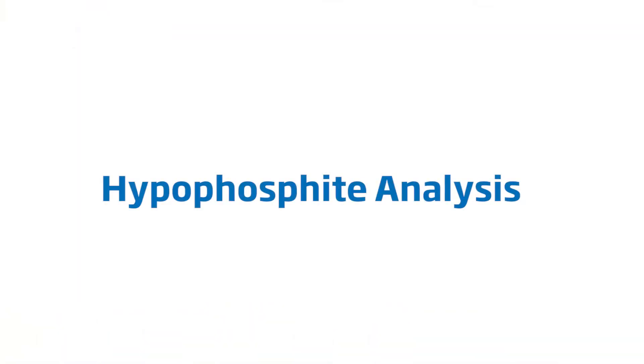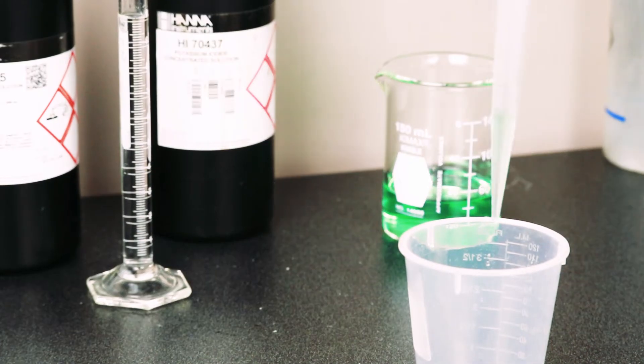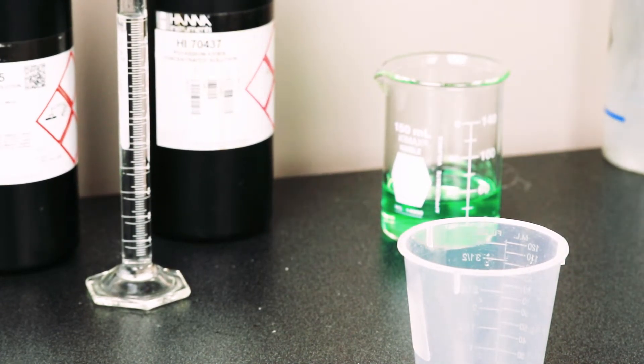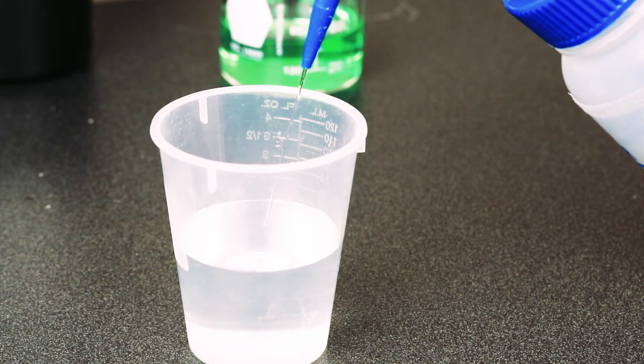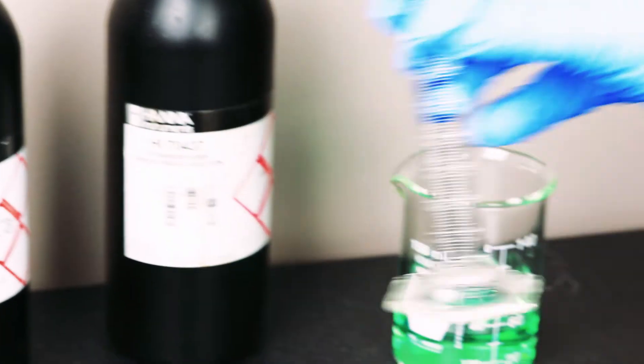Finally, the Hanna HI902 automatic titrator can measure hypophosphate content in your electrolyte bath. This procedure starts by taking a sample with enough deionized water to submerge the electrode and adding 10 milliliters of sulfuric acid to it.